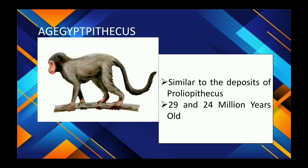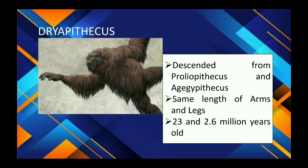Next is Aegyptopithecus, similar to Propliopithecus, dating 29 to 24 million years old. The fossil was found in Cairo, Egypt, and this species lived during the Oligocene time.